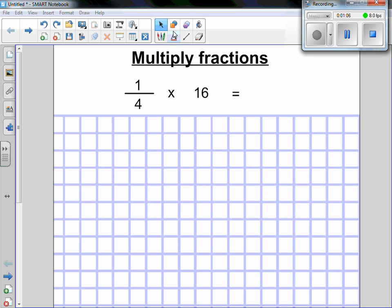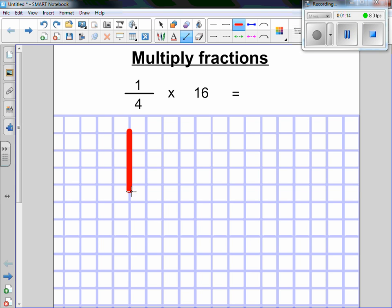Now, to do that, first I need to rope off sixteen squares. One, if I start there, one, two, three, four by one, two, three, four. So, there I have sixteen squares.